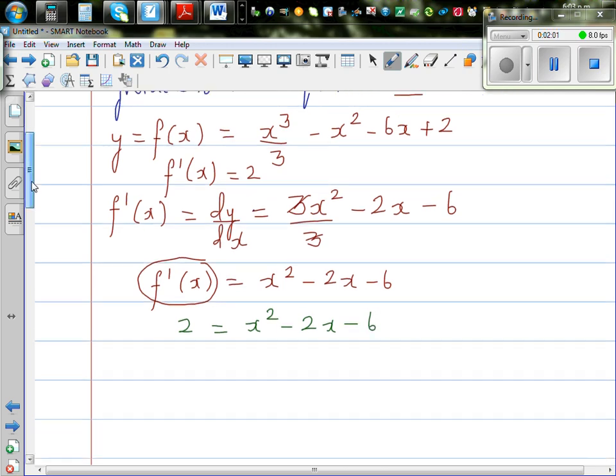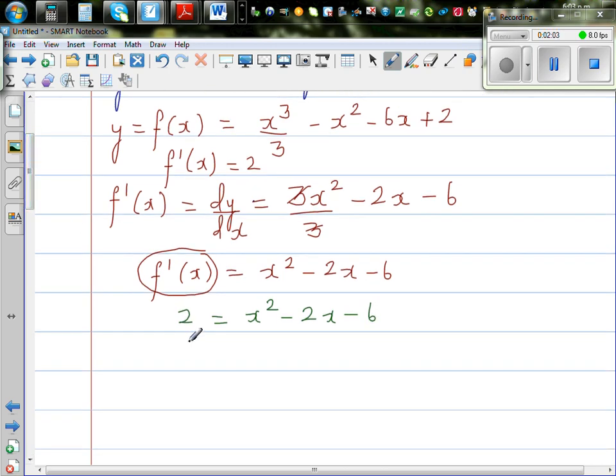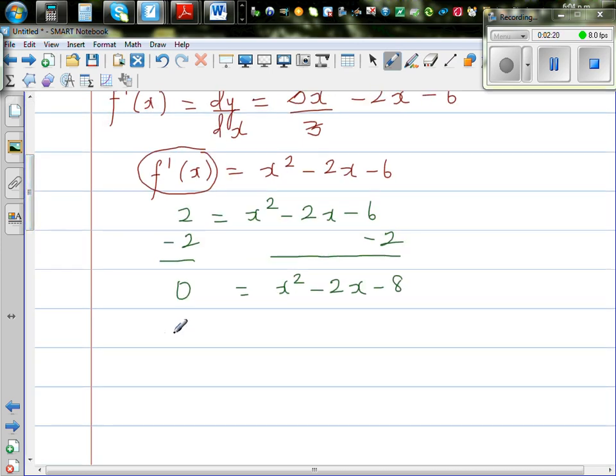I'm going to take away 2 from both sides, to make this a quadratic equation. So if you take away 2 from both sides, you get 0 is equal to x squared, minus 2x, minus 8.